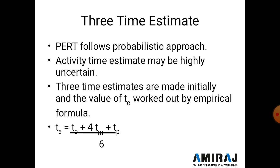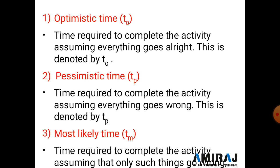Optimistic time (to) is the time required to complete the activity assuming everything goes right. All activities are completed as per schedule. For example, if we target excavation to be completed in three days and it is completed in three days, that time is known as optimistic time — denoted by to.